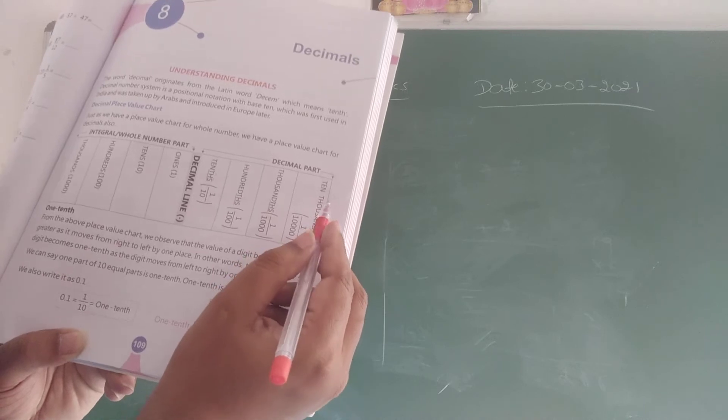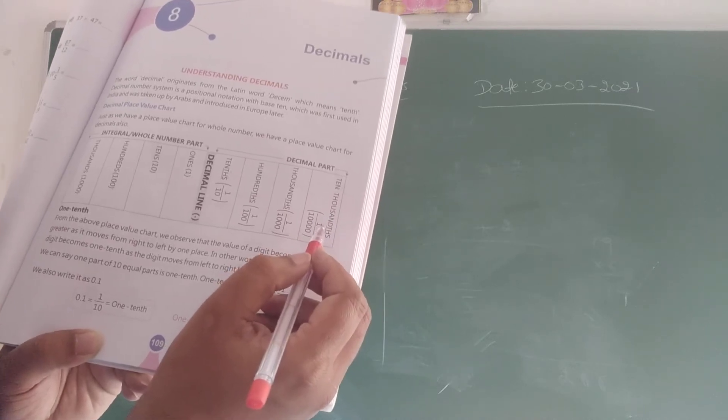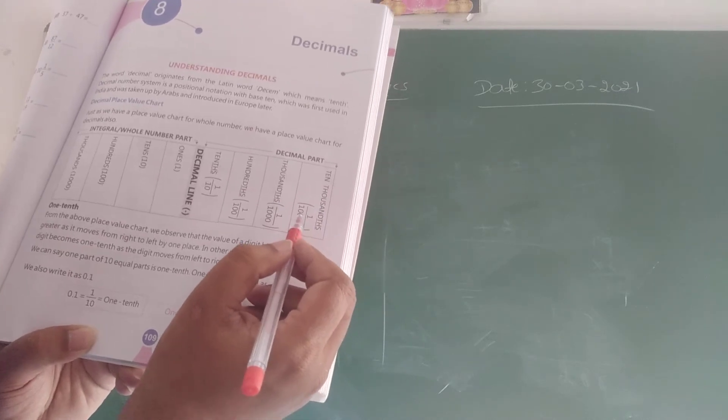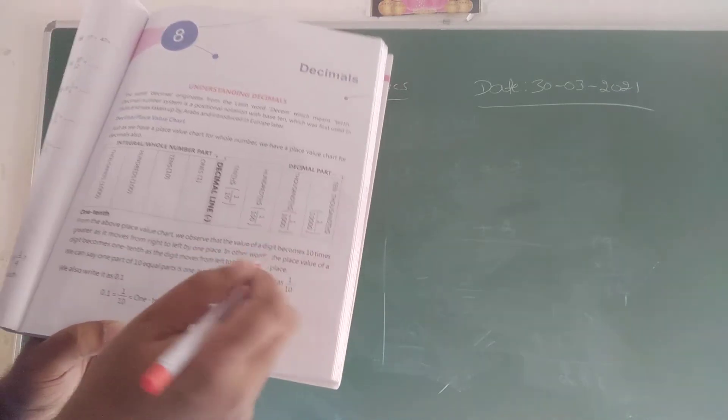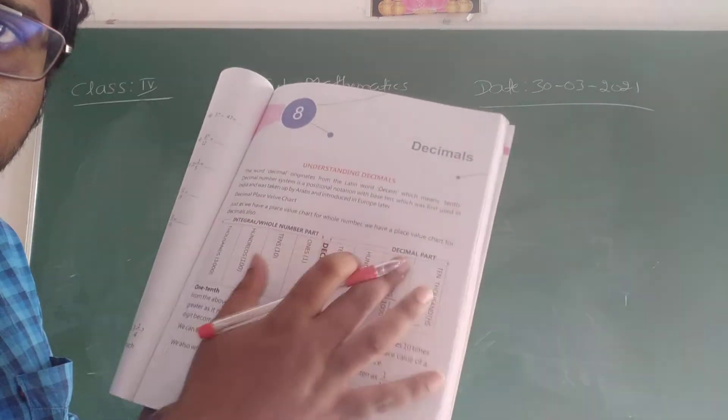The next digit is called as ten-thousandths, and it can be written as one divided by ten thousand. You have to remember this table.